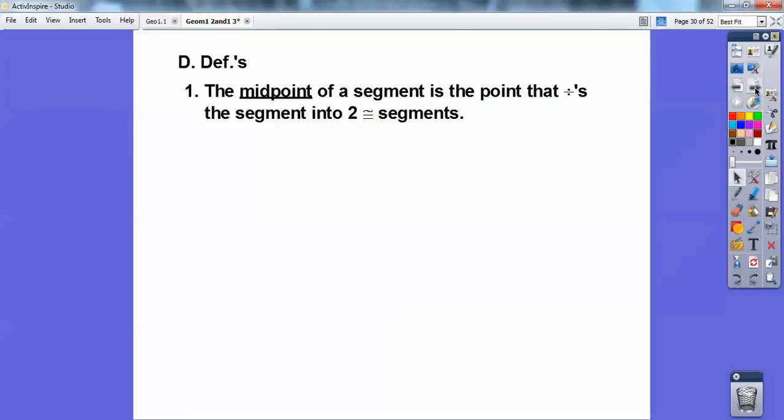So here's some definitions. The midpoint of a segment is the point that divides the segment into two congruent segments. So if this is the midpoint, then AM is going to be congruent to MB. Segment AM is congruent to MB. All right, so if it's the midpoint. So notice, I can say the length, this says the length of AB equals the length of MB. Or you say segment AB is congruent to segment, I'm sorry, segment AM is congruent to segment MB.